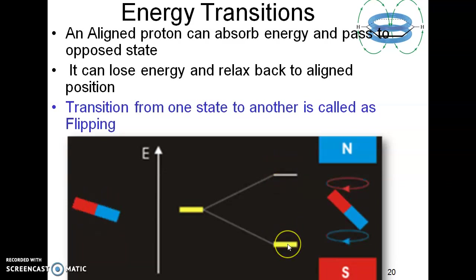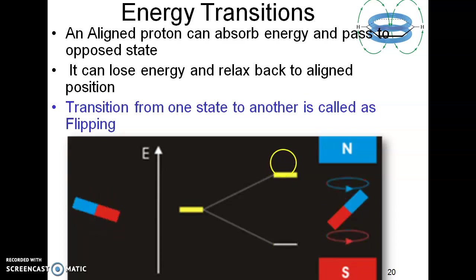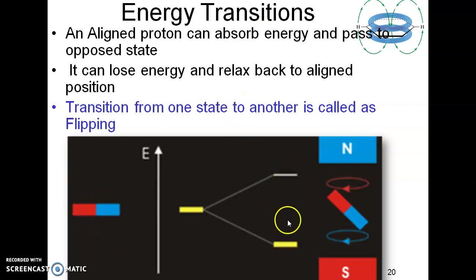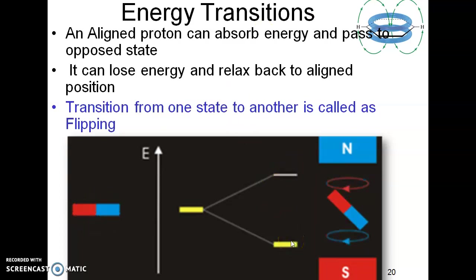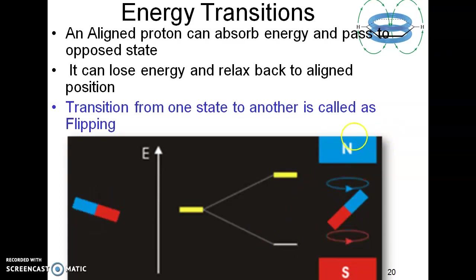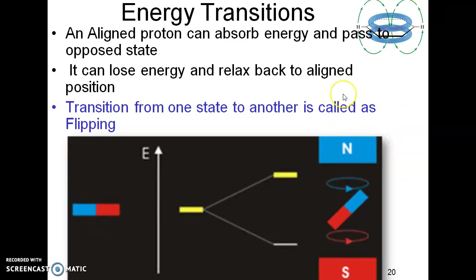When an aligned proton gains energy it can go to the opposed state, and when an opposed proton loses energy it can come to the aligned state. The transition from one state to another is called flipping. Protons are continuously in a mode of flipping, and these are called energy transitions.